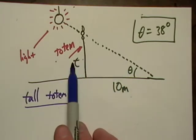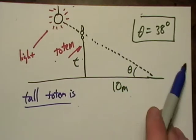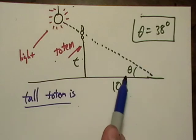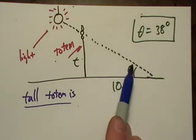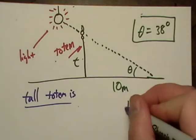Sine is opposite over hypotenuse. Cosine is adjacent over hypotenuse. Tangent is opposite over adjacent, and there's actually a little jingle to that.